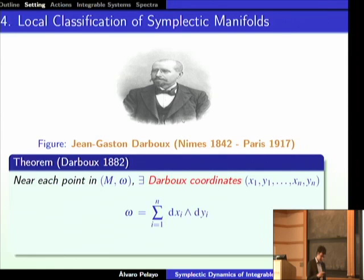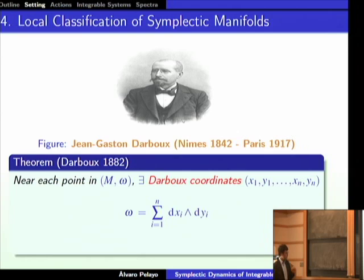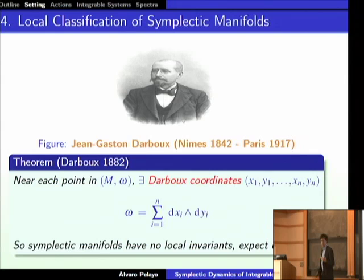R^{2n} was very important as a first example because it is the local model for all symplectic manifolds. This is a theorem that Darboux proved in the late 19th century. Darboux proved that if you look at any point in a symplectic manifold, there is a small neighborhood in which the symplectic form looks exactly like the standard form on R^{2n}. So symplectic manifolds have no local invariants other than the dimension — already a striking difference with Riemannian geometry, where the curvature is a local invariant.